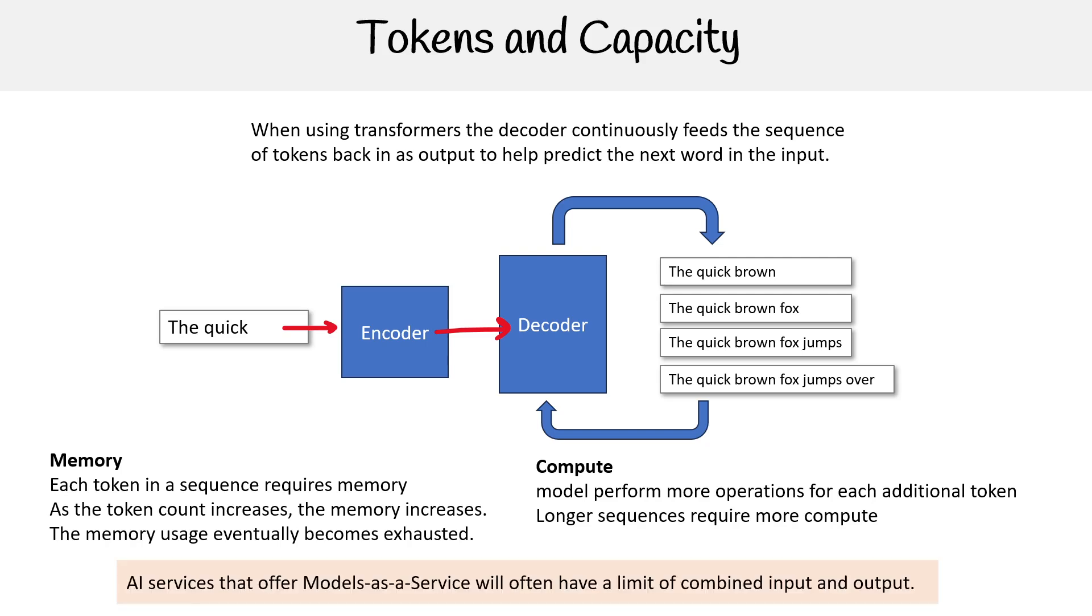A lot of AI services that offer models as a service will often have a limit of combined input and output, because it really has to do with the length of the sequence. If you have a huge input, you're not going to be able to generate a lot of words because you'll hit that sequence token limit a lot quicker.